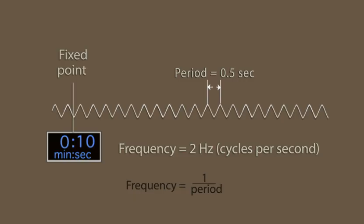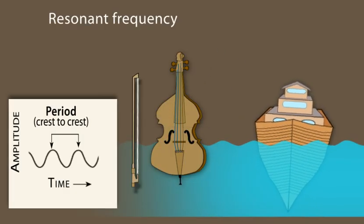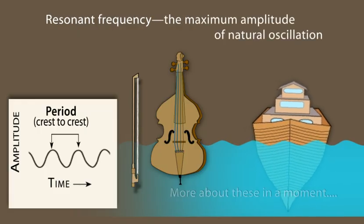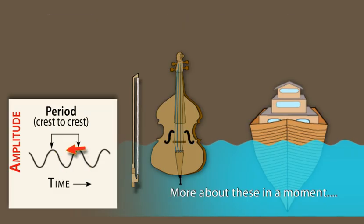Resonance is the tendency of a system to oscillate with greater amplitude at some frequencies than at others. The resonant frequency of any given system is the frequency at which the maximum amplitude oscillation occurs.